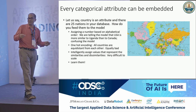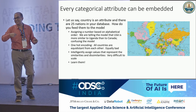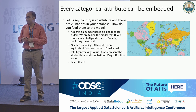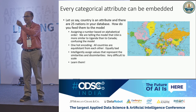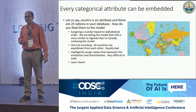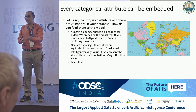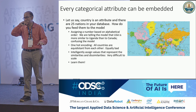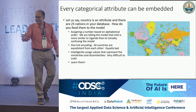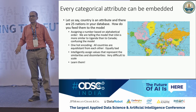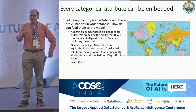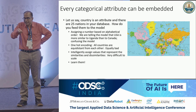Around three or four months back, I was on the West Coast paneling a session. My co-panelist was from Google. I asked him what one cool trick he could teach me. He said, if you don't know already: embedding categorical variables. So what exactly is it? Let's say your database has 25 nations — how do you represent them and feed them to a neural net?